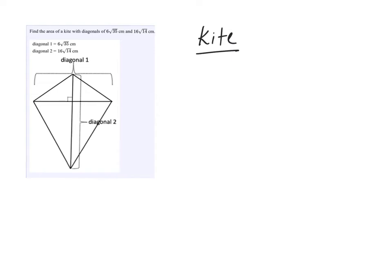A kite is a quadrilateral with two pairs of consecutive congruent sides. So these pairs are congruent, and these pairs are congruent.